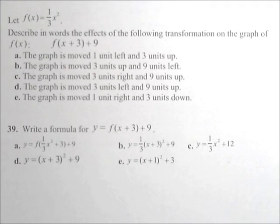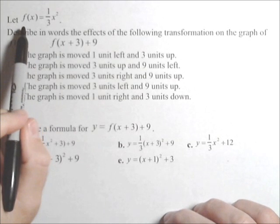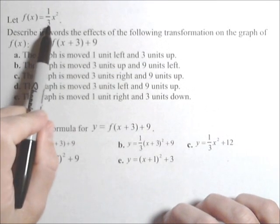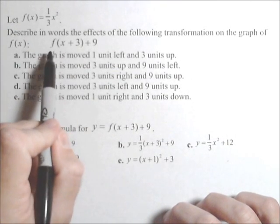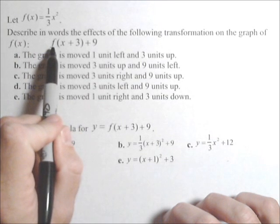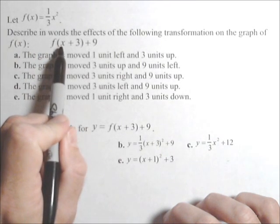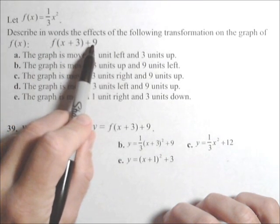So in this video, we're going to talk about the effects of a transformation. We're given the original function as one-third x squared, and we need to figure out what's happening if we do the following: f of x plus three in parentheses plus nine.